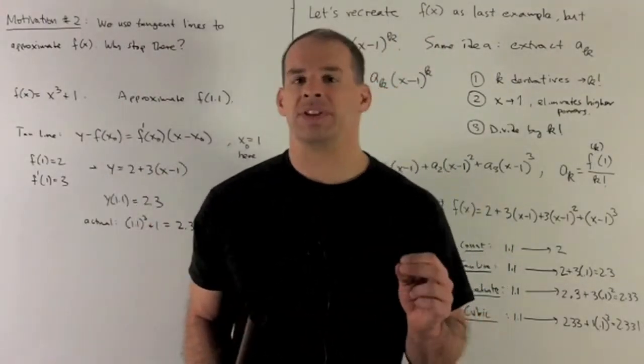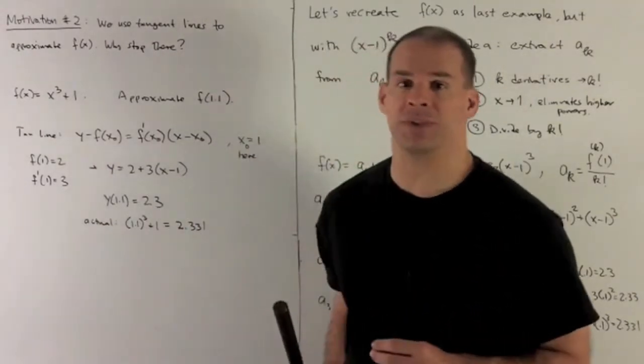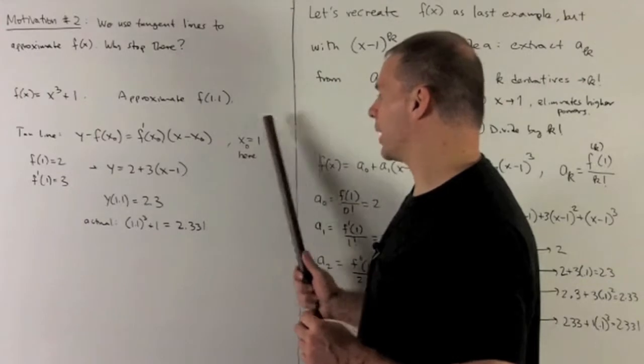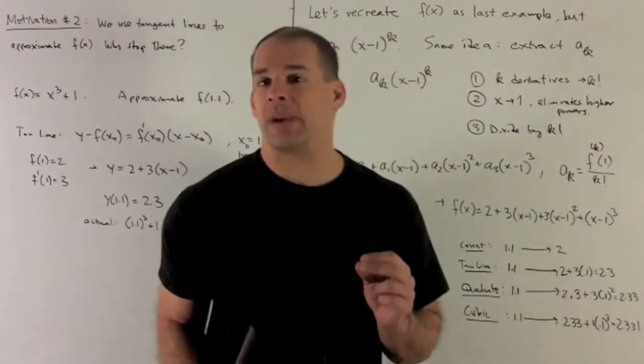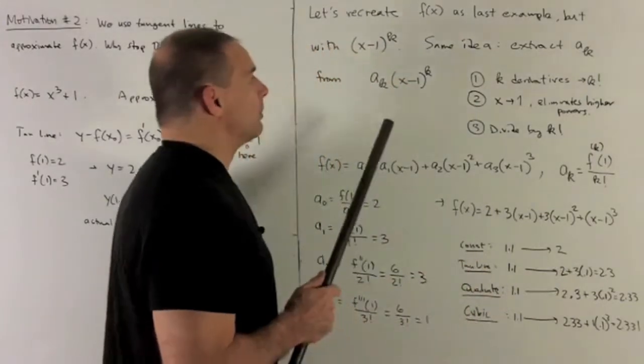We could do stuff at 0, but that's not going to help us here because 1.1 is kind of far from 0 compared to 1. So our approximation has to happen at the point 1.